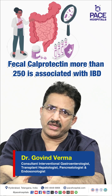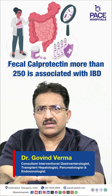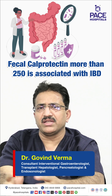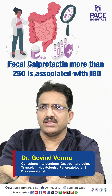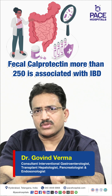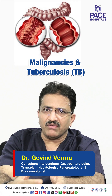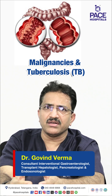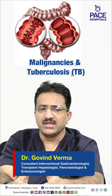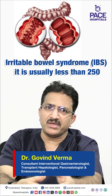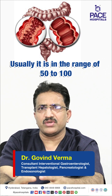Fecal calprotectin more than 250 in a new case is almost significant and associated with inflammatory bowel disease. It is not only inflammatory bowel disease — fecal calprotectin can also be elevated in other disorders like malignancy and tuberculosis, but the level of rise is more in inflammatory bowel disease compared to non-inflammatory bowel disease, whereas in irritable bowel syndrome it is usually less than 250, typically in the range of 50 to 100.